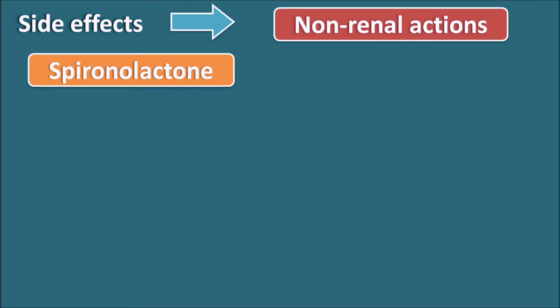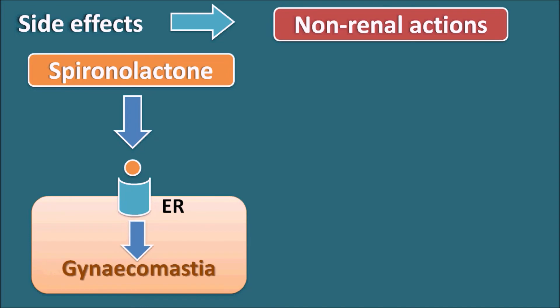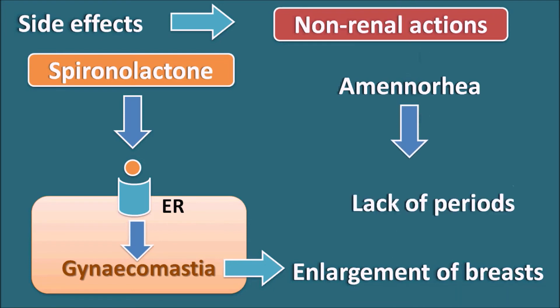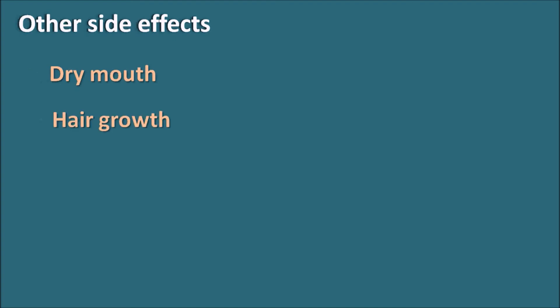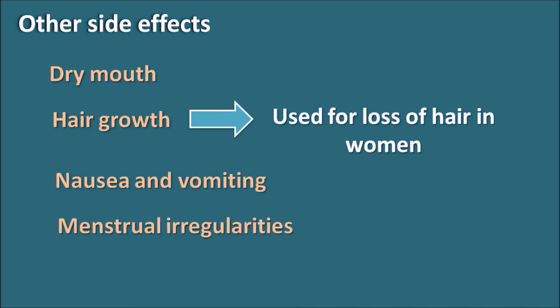Non-renal side effects of spironolactone arise from its steroidal nucleus. It can act on estrogen receptors, promoting gynecomastia — enlargement of breast tissue in both men and women. Due to its steroidal actions, it can also cause amenorrhea, which is lack of periods in women. Other side effects include dry mouth, hair growth, nausea, vomiting, and menstrual irregularities.